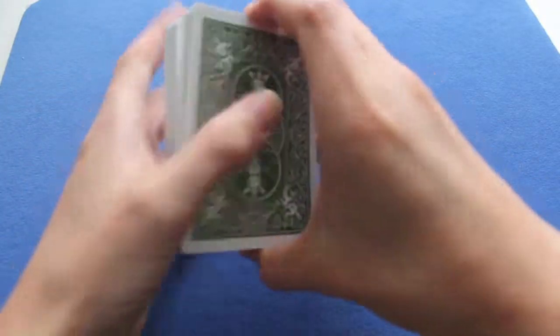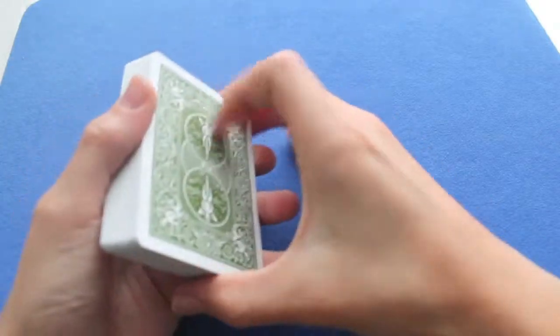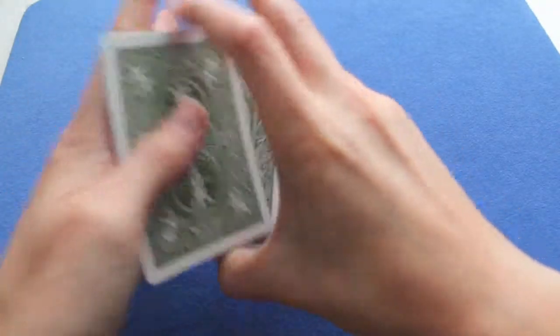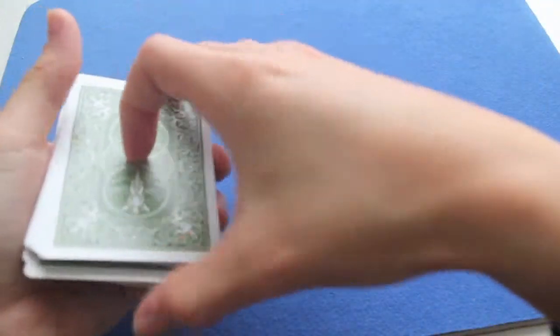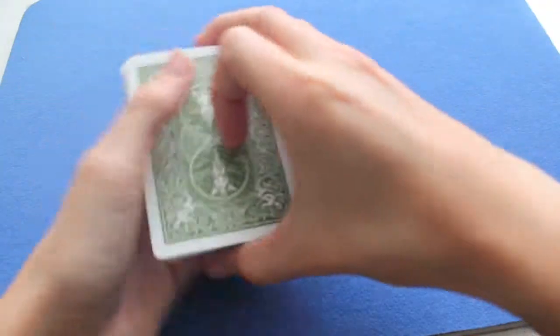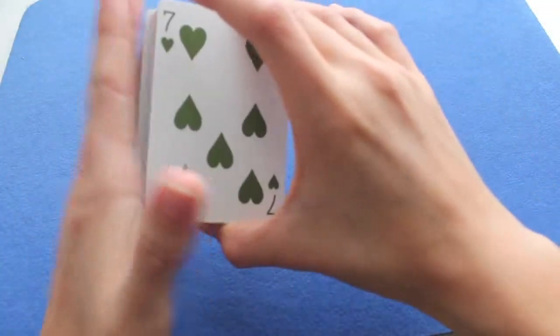So once again, I'll do it at full speed. And the explanation, you swing cut the top part. Swing cut another one. You catch a pinky. You exchange. You catch another pinky. You put it on the top. You put the bottom part on the top. And look, 7 of hearts, 7 of diamonds. Really easy.